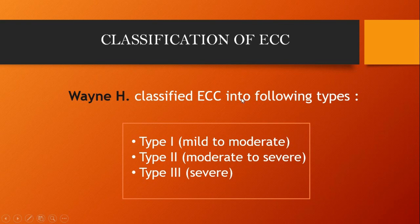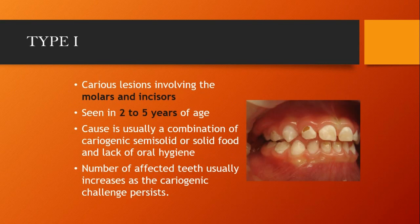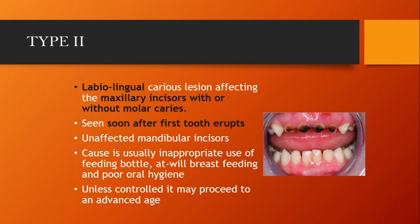Classification of early childhood caries — when age-classified, ECC includes the following types: Type 1 is mild to moderate, Type 2 moderate to severe, and Type 3 is severe. Type 1 is the type of ECC in which only the molars and incisors are involved. It is seen in 2 to 5 years of age. The cause is usually a combination of cariogenic semi-solid or solid food and lack of oral hygiene. The number of affected teeth usually increases as the cariogenic challenge persists.